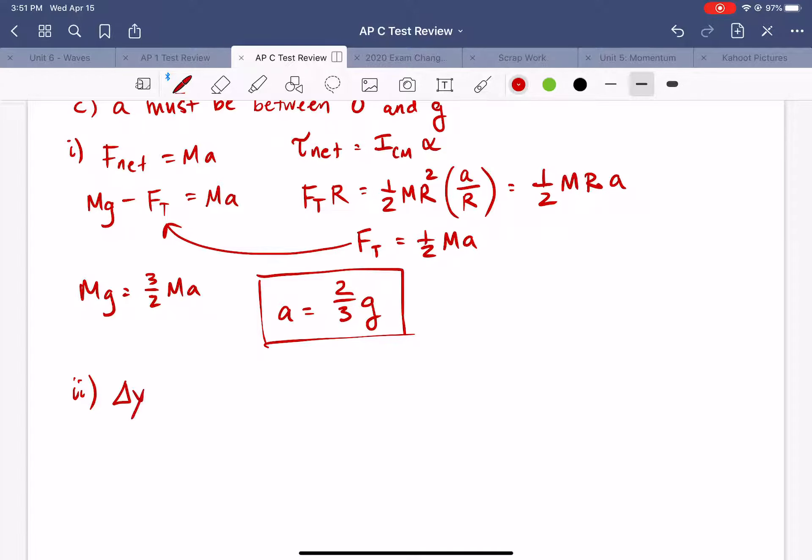Okay so remember that the height that this thing has to fall through is 3R and we can say that the change in Y is equal to 1/2 times acceleration times ΔT². All right so the change in the Y position is 3R. It's going to equal 1/2 times 2/3 G times ΔT². So if we cancel some things and simplify 9R divided by G equals ΔT². So ΔT equals 3 times square root of R over G.